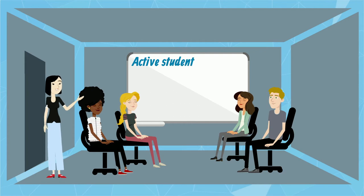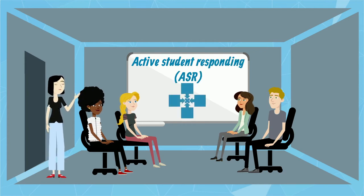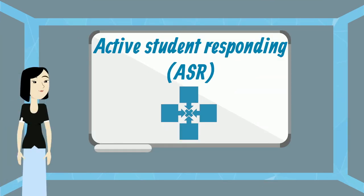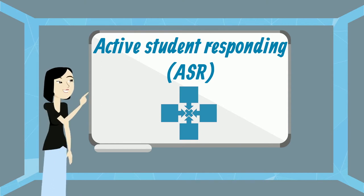Active student responding is a strategy for increasing student engagement. But before teachers could implement this new strategy, Ms. Chow needed to determine if it was usable. In other words, is the strategy clear and defined enough for Mr. Wallace to use in his classroom with fidelity?